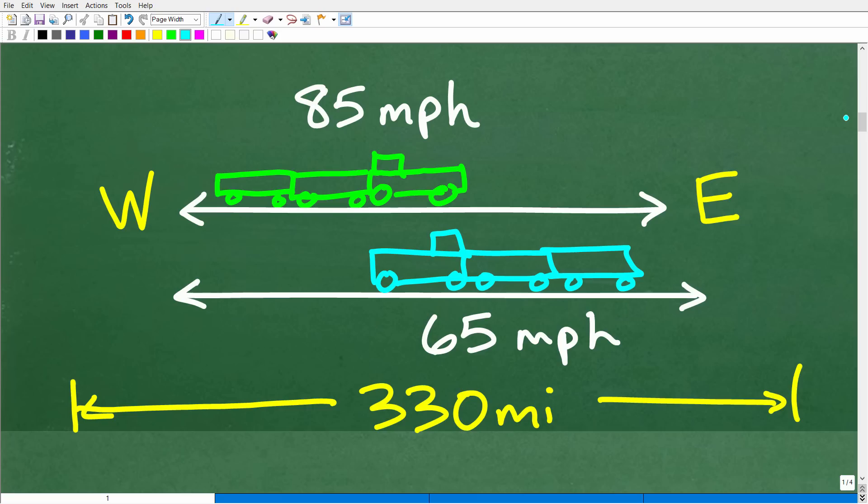Okay, so here is my lovely sketch. And of course, we have to be clear here that these trains are not on the same track, right? Because that would not be good. So these tracks are running parallel to another and one train is going east and one train is going west.